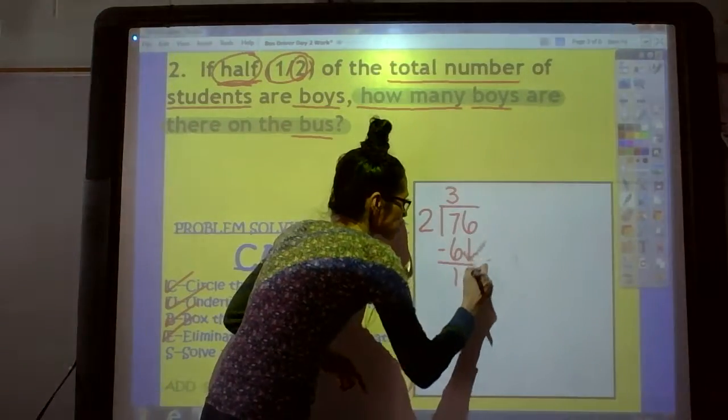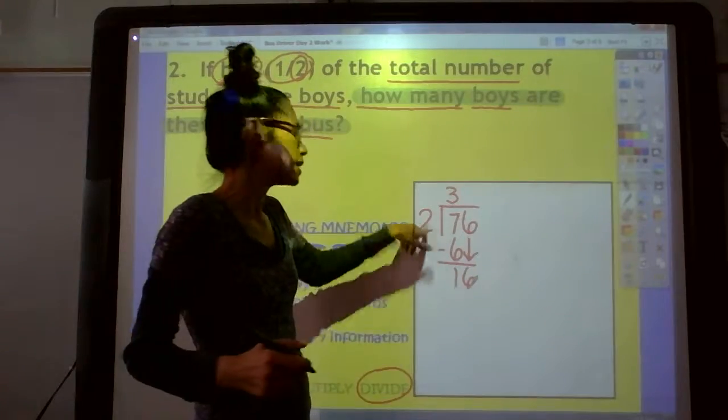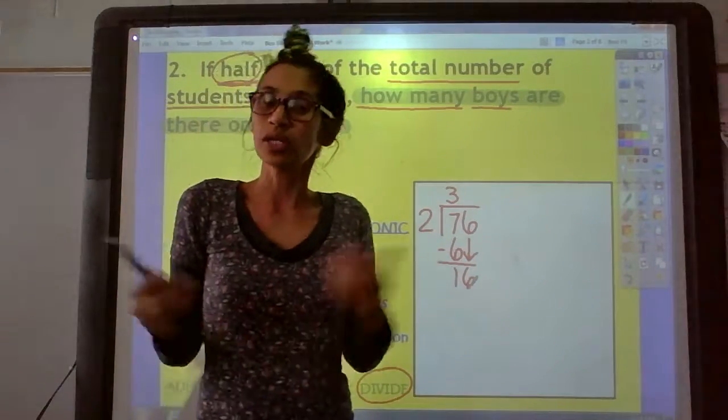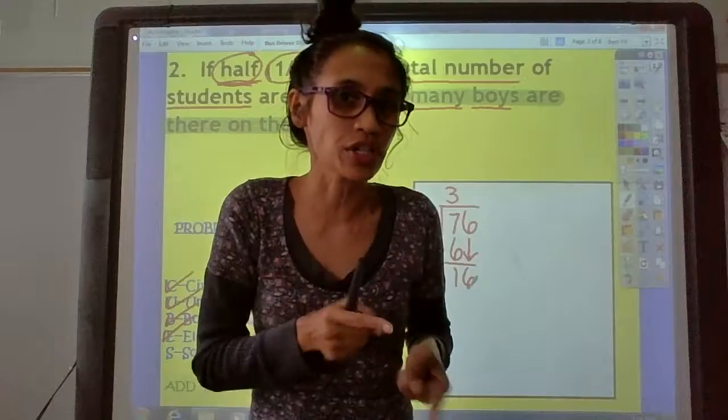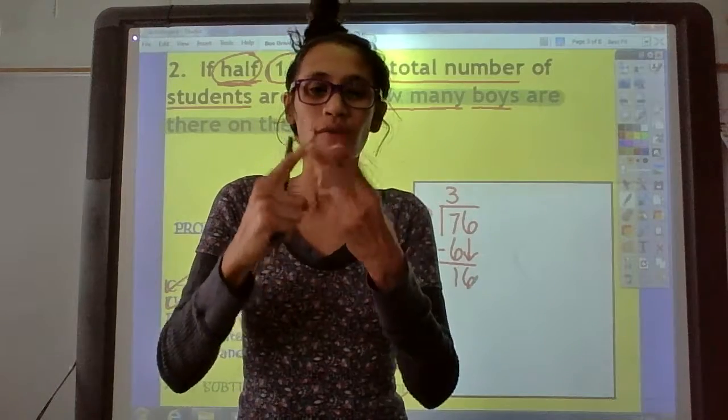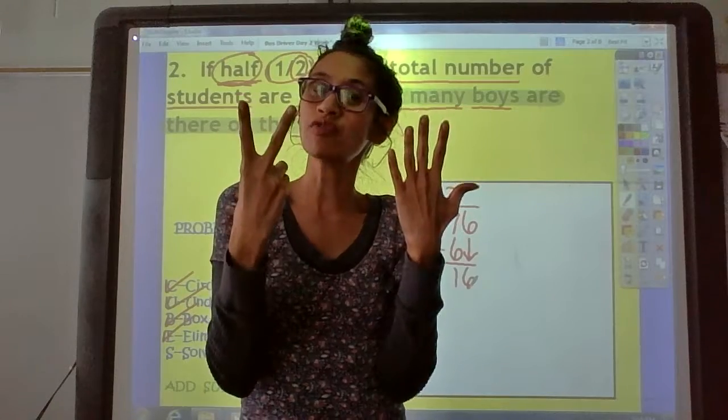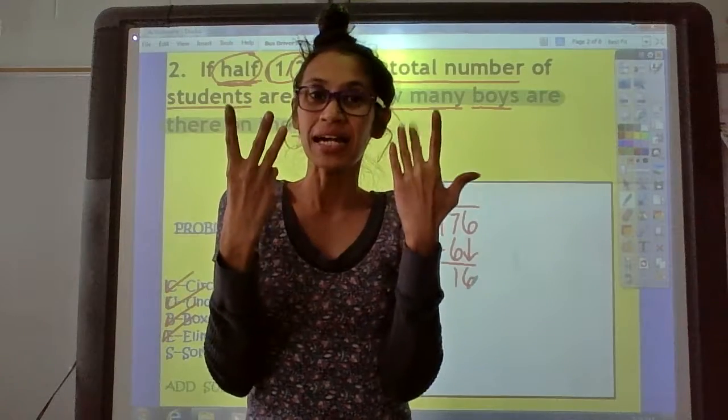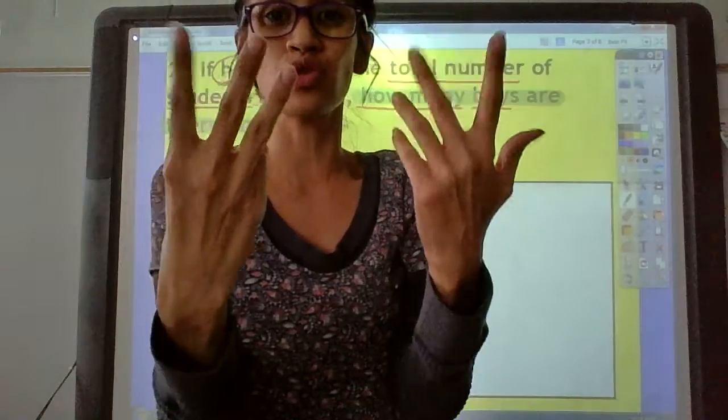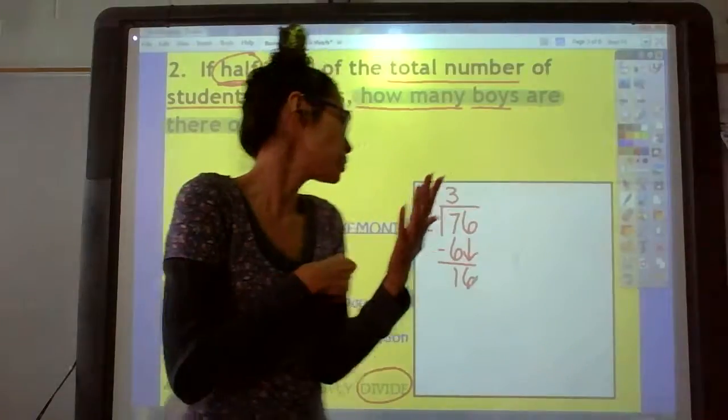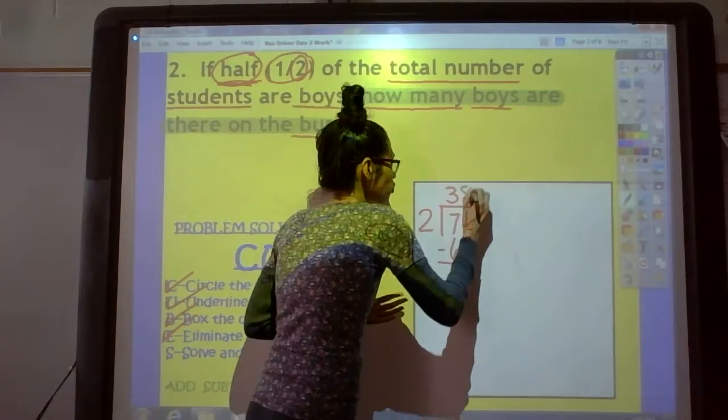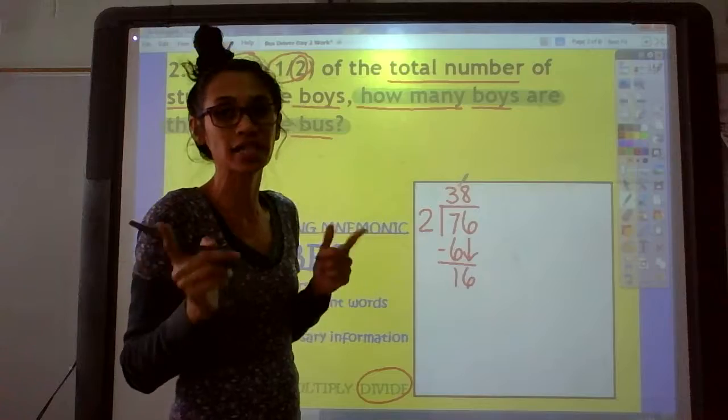Bring down that 6. Now, I have 16. 16 divided by 2. Let's skip count by 2. If you don't know your division facts. 2, 4, 6, 8, 10, 12, 14, 16. How many times did I count by 2? 8 times. Now, again, if you don't know your facts, make sure you practice, practice every day.